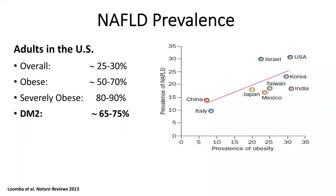How common is NAFLD in the United States? About 25% of all adults will have fatty liver disease — one in four. If you are obese, that goes up to 50–70%. And very importantly, in patients with type 2 diabetes, up to two-thirds will have evidence of fatty liver disease. Anyone with type 2 diabetes should be considered for screening.